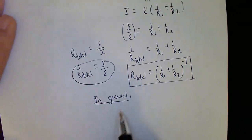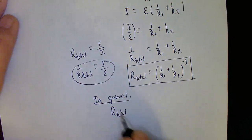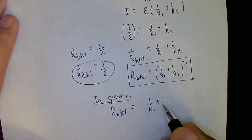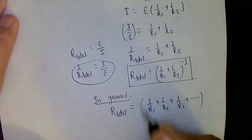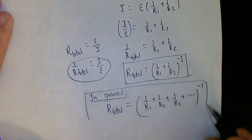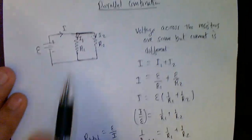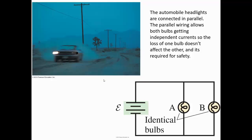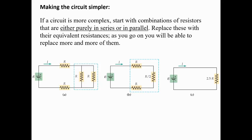In general, for any number of resistors combined in parallel, the total resistance is given by 1/R_equivalent = 1/R1 + 1/R2 + ... + 1/Rn — and don't forget to take the reciprocal at the end. A practical example of parallel combination is automobile headlights, which are always connected in parallel. Parallel wiring allows both bulbs to receive independent power from the battery, so losing one bulb doesn't affect the other.